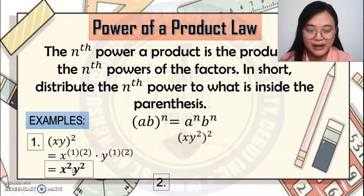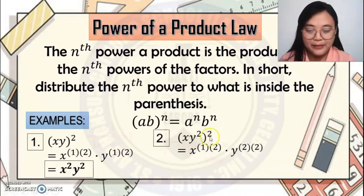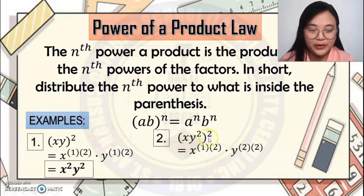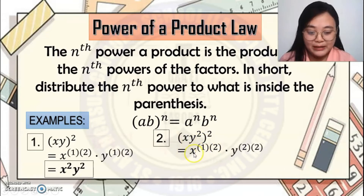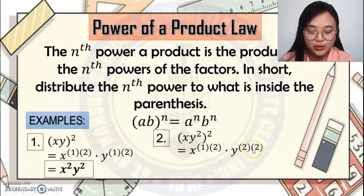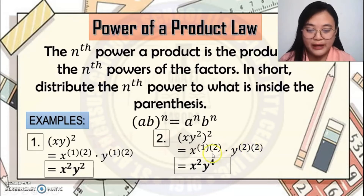Next example: distribute squared to the terms inside the parenthesis. It will be equal to x to the 1 times 2, and y raised to 2 times 2. Simplify — the answer is x squared y to the 4th.